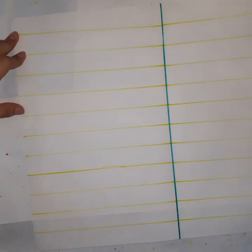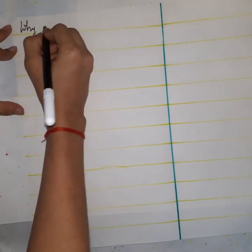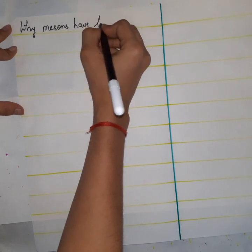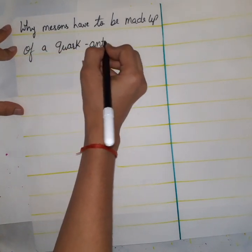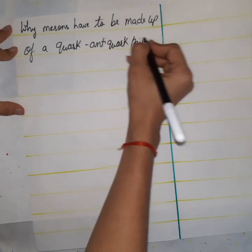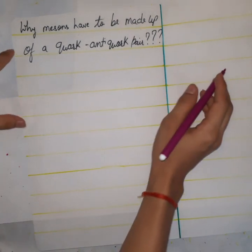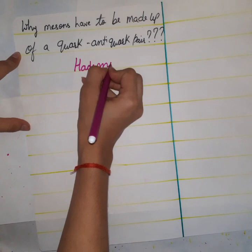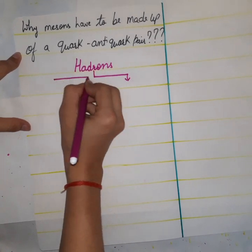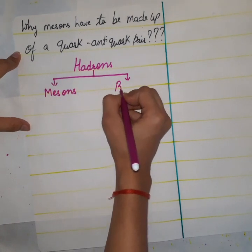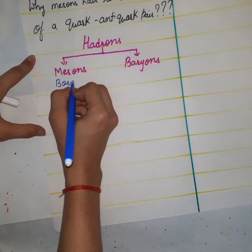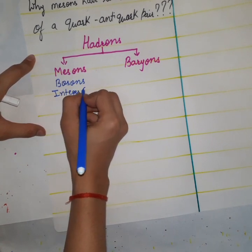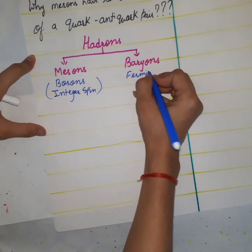Hello and welcome. Today we will learn about why mesons have to be made up of a quark-antiquark pair. As we all know, hadrons are subdivided into two parts: the first one is mesons and the second is baryons. Mesons are bosons having integer spin, whereas baryons are fermions having half-integer spin.